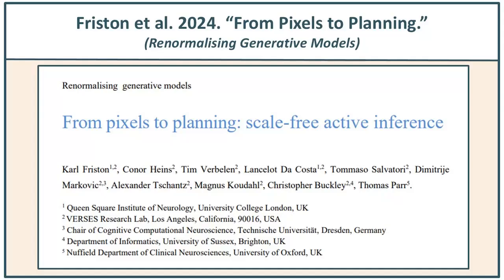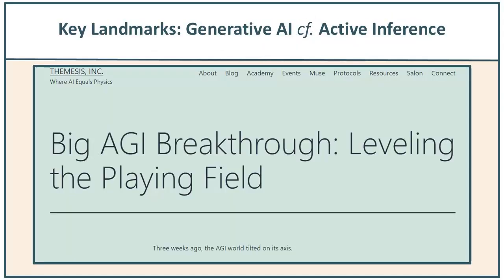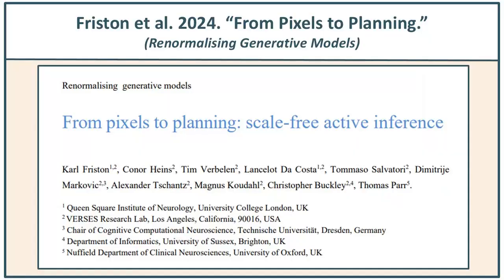As we read this paper — and for links to the paper, please go to the description box below and click on the link to the blog post, which has links to the paper we're discussing today and a lot of other supporting papers, very useful for you — the paper is called 'From Pixels to Planning,' and essentially what it's doing is addressing the single greatest issue in making active inference a practical, realistic tool in AGI.